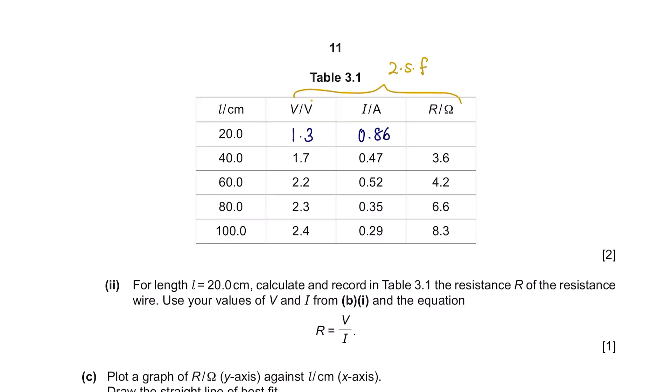Next, part 2. For a length 20cm, calculate and record in table 3.1 the resistance R of the resistance wire. Use your values of V and I from B part 1, and the equation R equals V over I. So for R here, we will use 1.3 voltage divided by 0.86, giving us this value. But we only use two significant figures, so that would be 1.5.